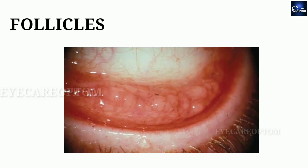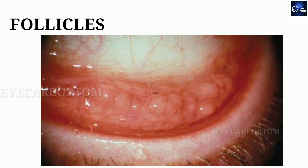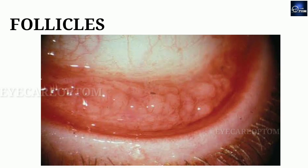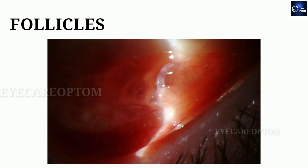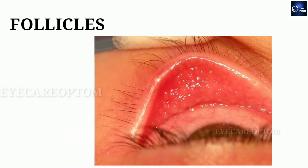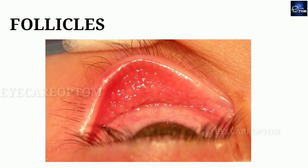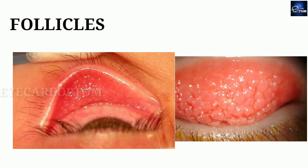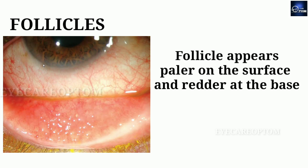Conjunctival follicles are round collections of lymphocytes, often most prominent in the inferior fornix. They are small dome-shaped nodules without a prominent central vessel. Blood vessels may overlay the follicle but they are not a prominent component within them. This helps us to differentiate follicles from papillae.